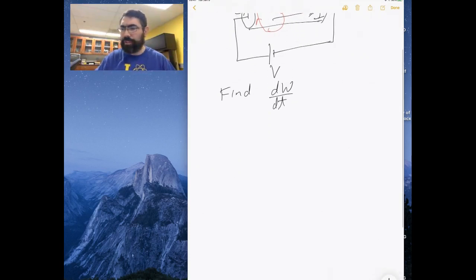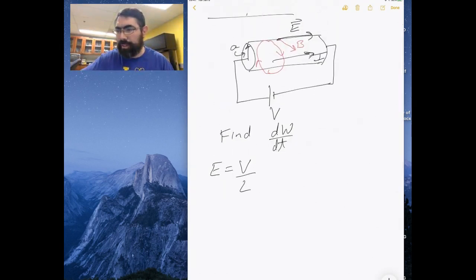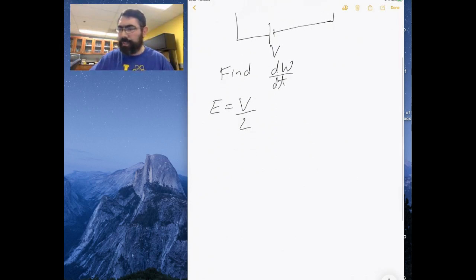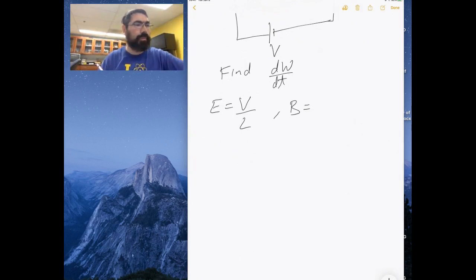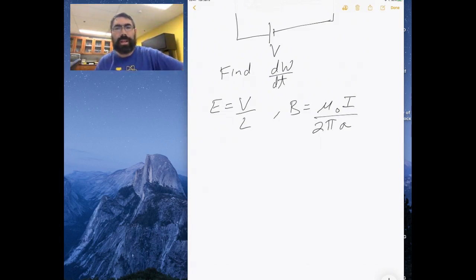So what are these values? Well, the electric field is just the potential divided by the length of the wire, so this wire has a length L. And the magnetic field I can calculate for a wire as mu zero times the current divided by the circumference. I would just use Ampere's law to figure out the magnetic field of a current carrying wire.